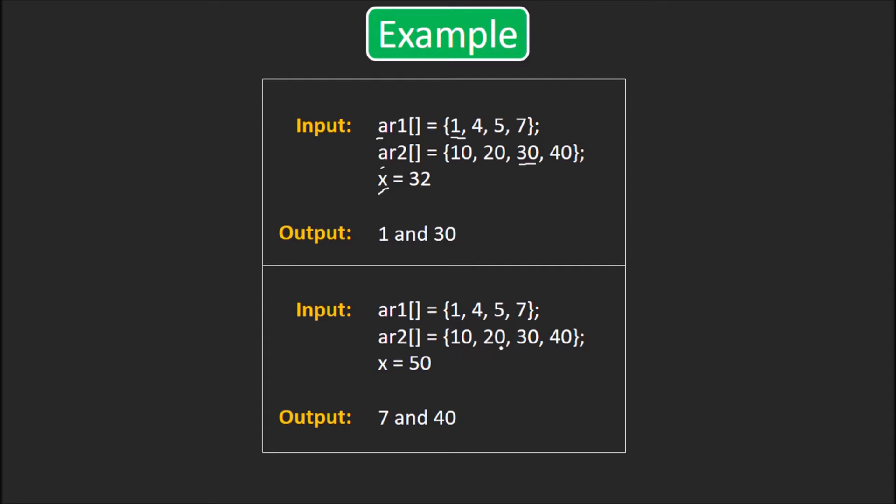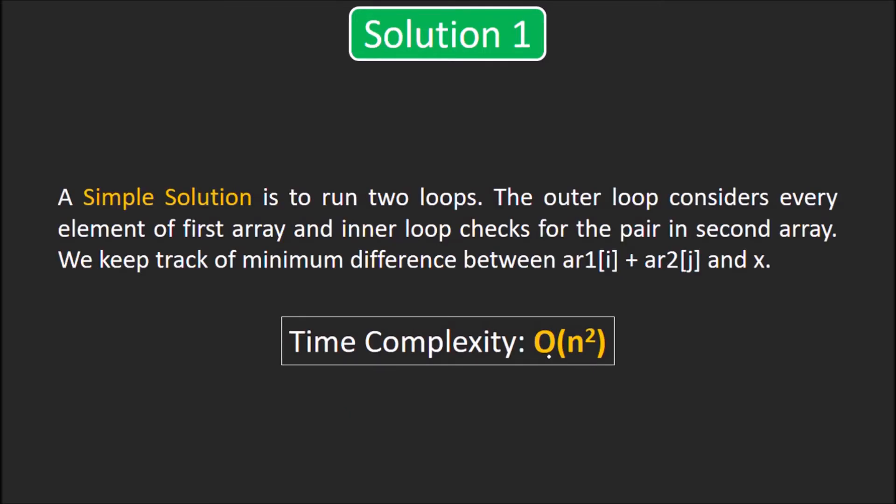Similarly, in the second example where x is 50, 7 and 40 are the pair whose sum is closest to 50. Let's look at our first solution which is a much simpler approach. Use two loops. The outer loop iterates over all elements of first array and the inner loop iterates over elements in the second array. We consider every possible pair and keep track of the minimum distance between their sum and x. The time complexity of this solution will be O(n²).